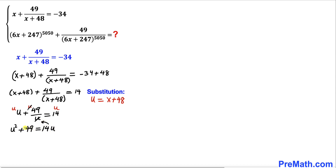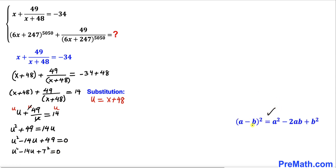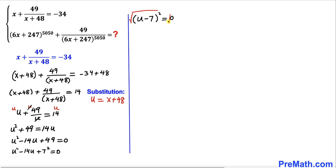Moving terms to the left hand side, we notice that 49 is 7 squared. So this equation becomes u squared minus 14u plus 7 squared equals 0. Recalling the identity a minus b whole squared, this is a perfect square: u minus 7, whole squared, equals 0. Taking the square root of both sides gives u minus 7 equals 0.